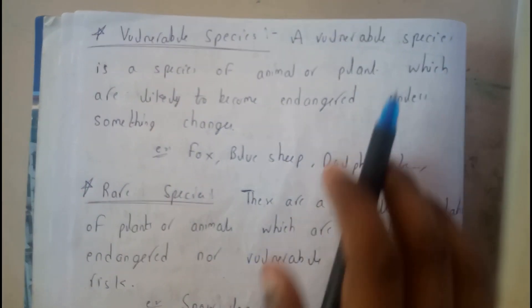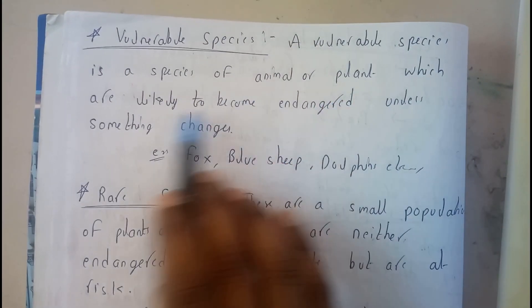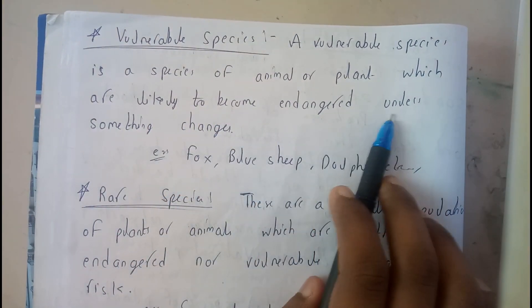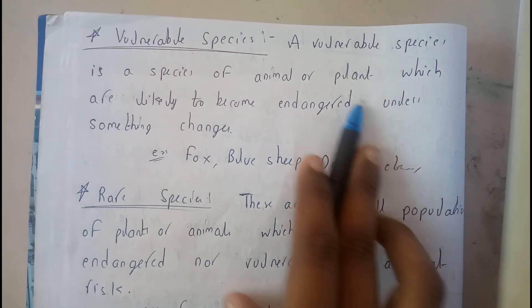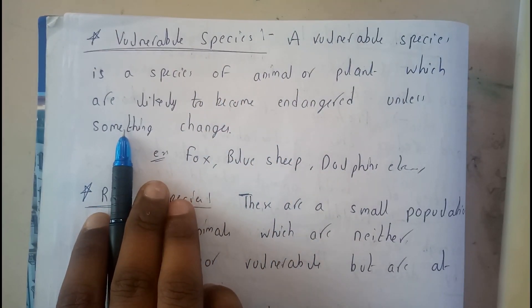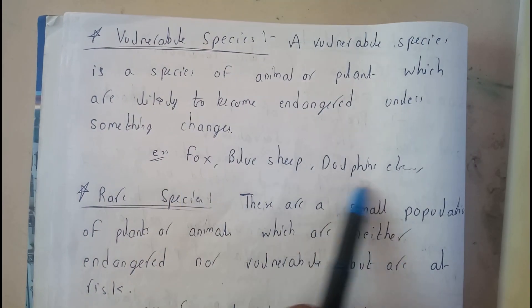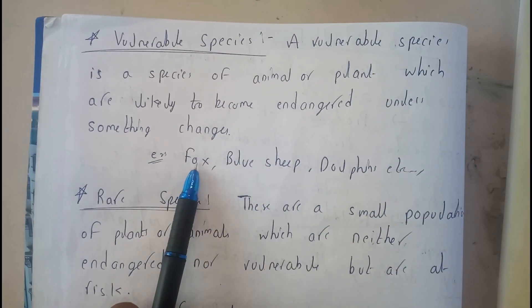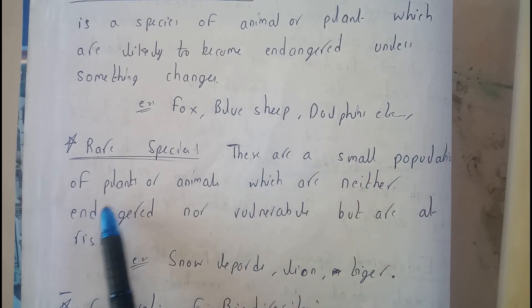Vulnerable species are animals or plants which are likely to become endangered unless something changes. These animals are for sure going to go extinct if there is no change in the environment or in man-made activities. Examples include dolphins, blue sheep, and fox.